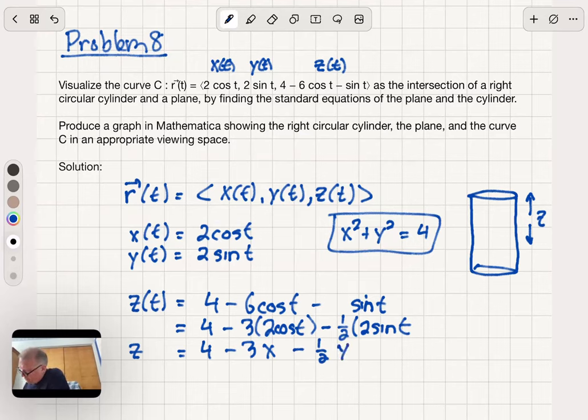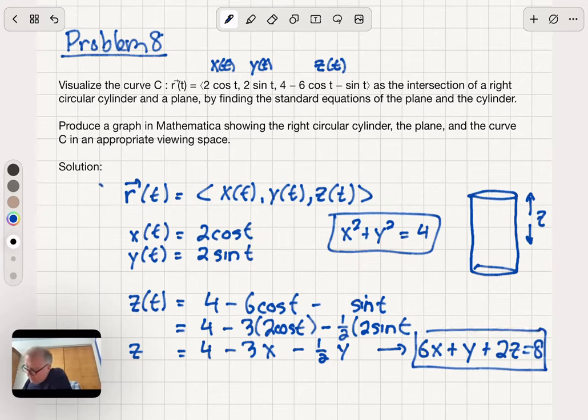If I bring the x and y to one side, the left side, double everything so I don't have to look at the fraction, I recognize this as the equation of a plane, 6x plus y plus 2z equals 8. So our curve C lies both on this cylinder and on this plane. That means it must be the intersection of the two. Let's see if we can accomplish that looking at Mathematica.